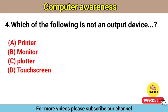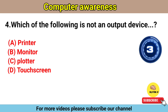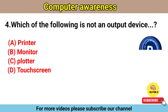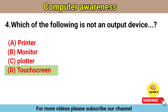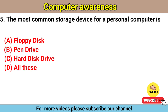Which of the following is not an output device? Option A: printer. Option B: monitor. Option C: plotter. Option D: touch screen. The right answer is option D, touchscreen.